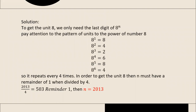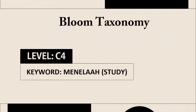In order to get the unit digit 8, n must have a remainder of 1 when divided by 4. 2,013 divided by 4 equals 503 with a remainder of 1. So n equals 2,013. Based on Bloom's taxonomy, this question is on level C4 with the keyword 'study'.